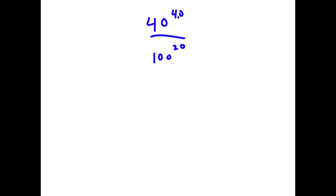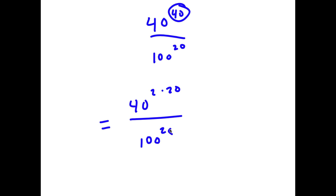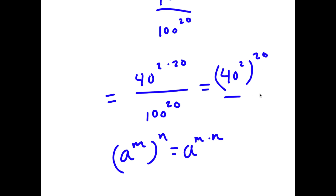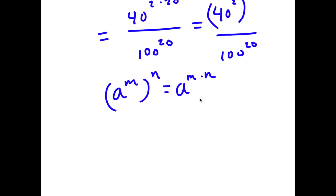In this problem I have 40 to the power of 40 over 100 to the power of 20. To solve this, I'm going to first rewrite 40 here as 2 times 20. So now I have 40 to the power of 2 times 20 over 100 to the power of 20. If I have something in the form a to the power of m to the power of n, this is the same thing as a to the power of m times n. So 40 to the power of 2 times 20 can be written as 40 to the power of 2 to the power of 20. Now I have this over 100 to the power of 20, and 40 to the power of 2 is going to be 1600.